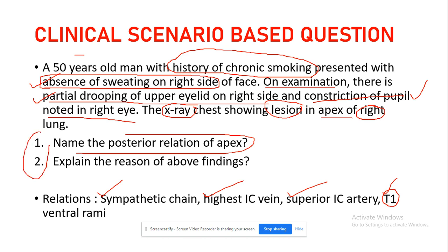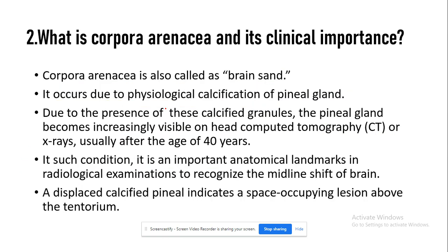There are two questions based on this clinical scenario: name the posterior relations of the apex, and explain the reason — which is compression of the sympathetic chain. Now another very important term is corpora arinacea.